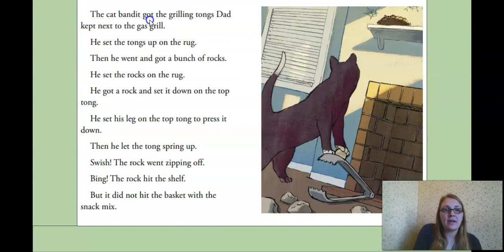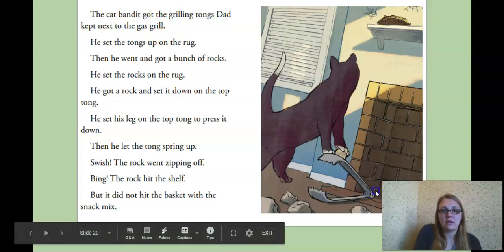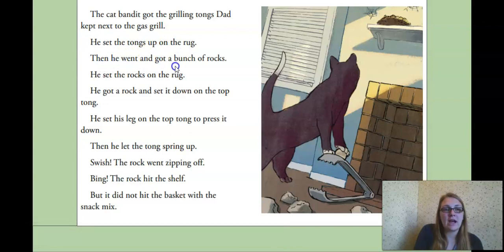Then he got up and ran off to the deck. The cat bandit got the grilling tongs Dad kept next to the gas grill. See who's got these tongs right here? Long, grabby things. He set the tongs up on the rug. Then he went and got a bunch of rocks. Hmm.